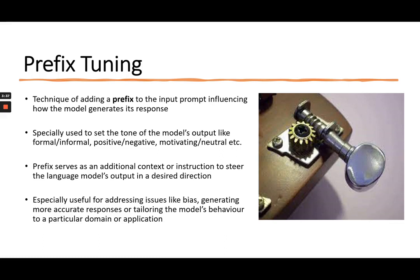The usage areas include addressing issues like biasing. Not only can you address biases, but you can also include biasing if you want. Apart from that, it also helps generate more accurate responses or tailor the model's behavior to a particular domain or application, so responses in a particular domain can be tuned accordingly.